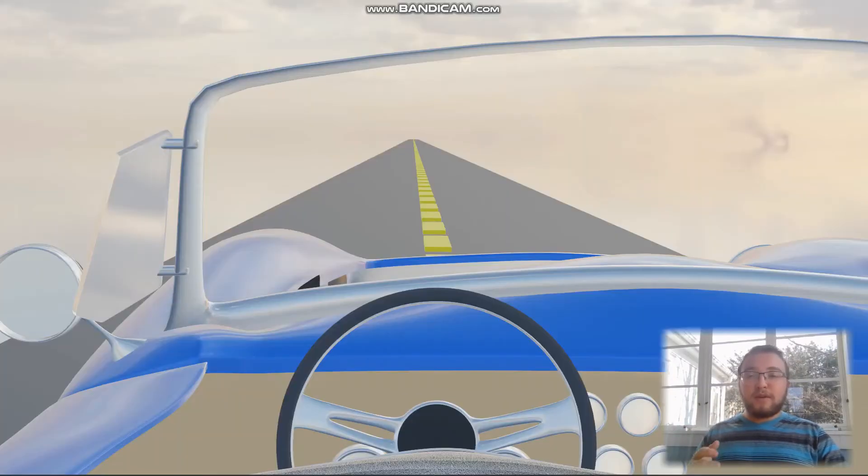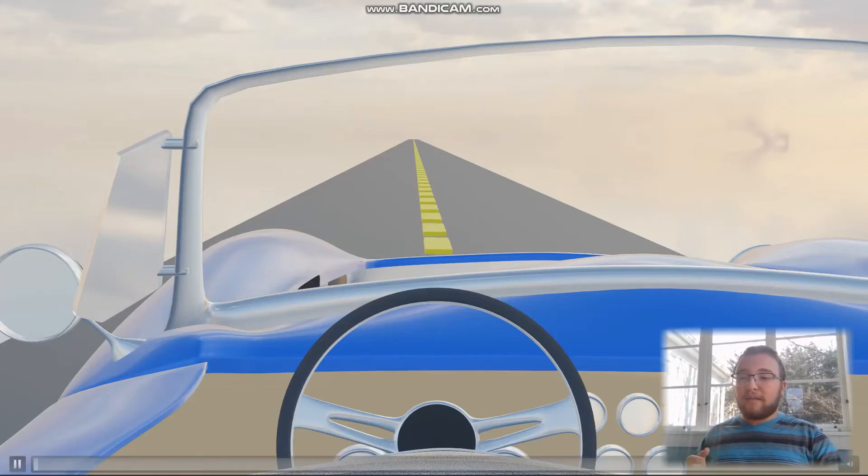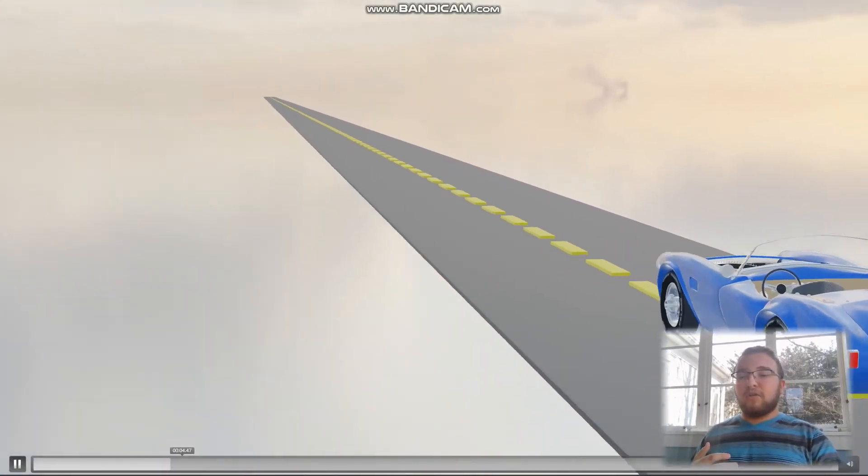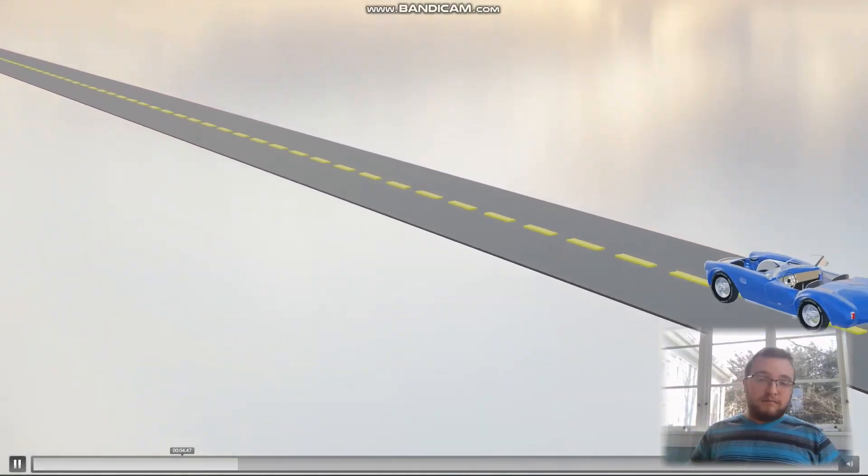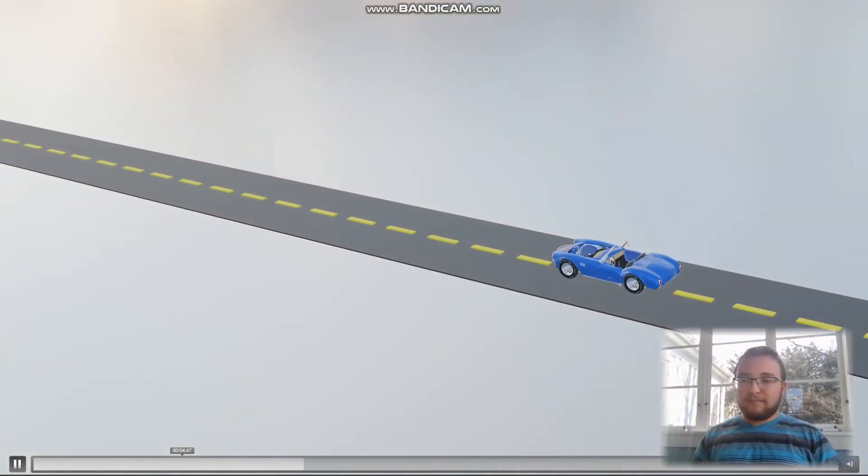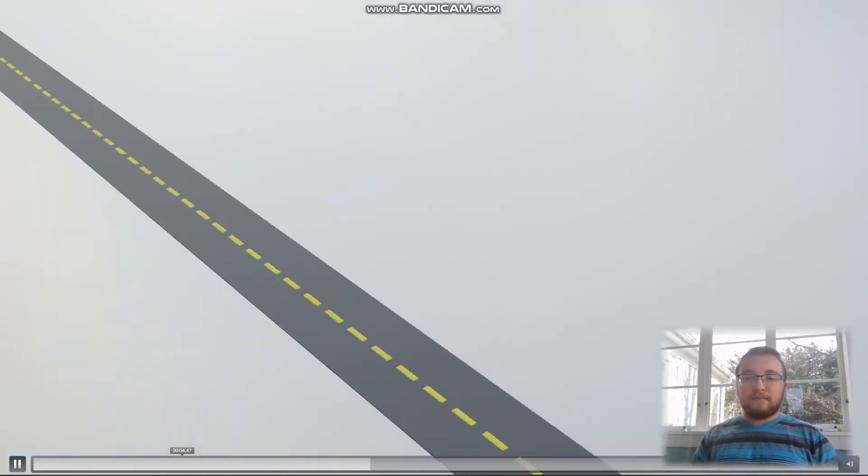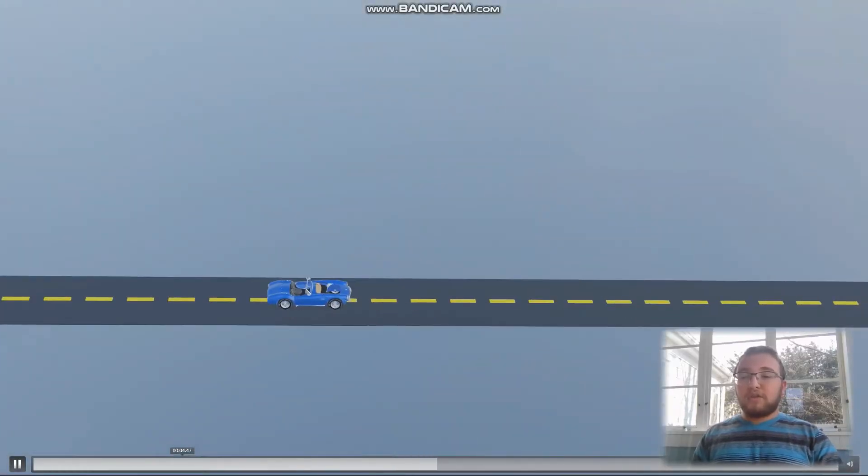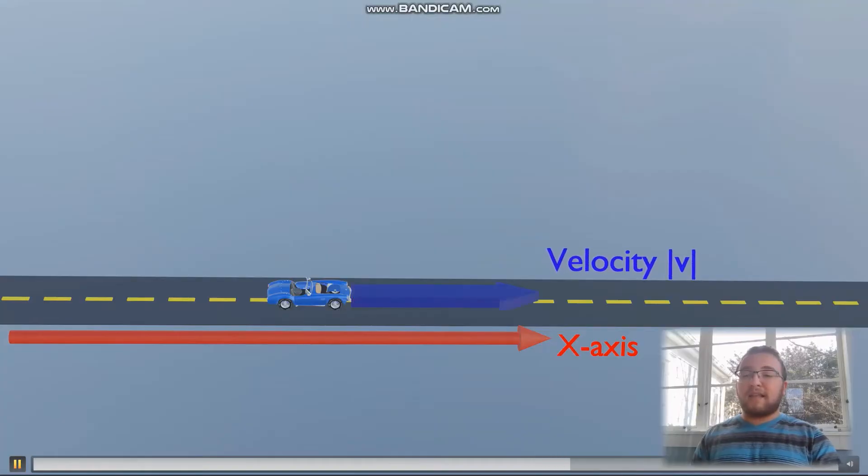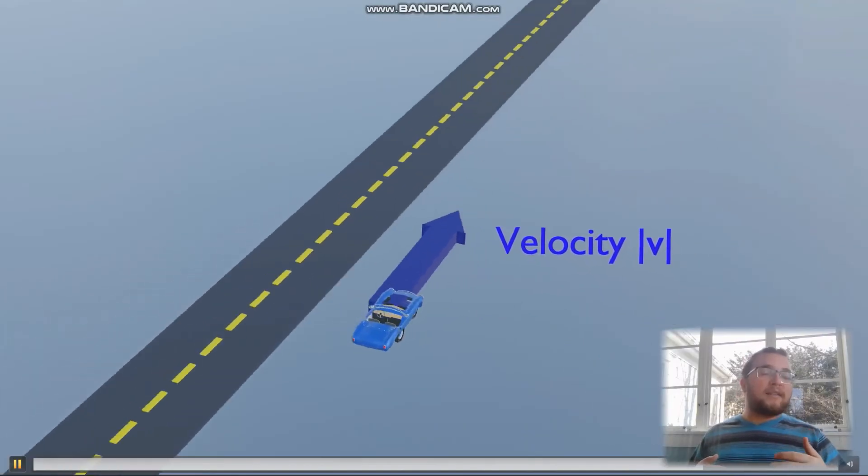Now to demonstrate this a little bit more, we have an animation. We have this car driving down a road, and let's just watch for a second. So it's driving down the road, and we're going to look at it and call it the x-axis. And this velocity is only in the x-axis.